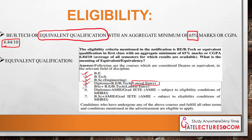Other equivalent qualifications include B.Sc plus BE with lateral entry, or Diploma plus AMIE, and B.Sc plus AMIE. AMIE is for students who have done a diploma. Those students who have undergone any of the above courses and fulfill all the other terms and conditions mentioned in the advertisement are eligible to apply.